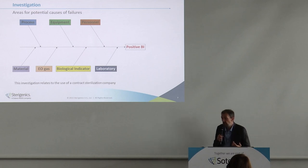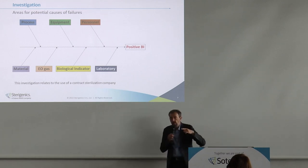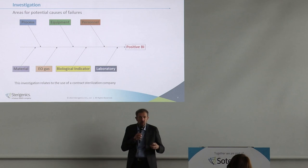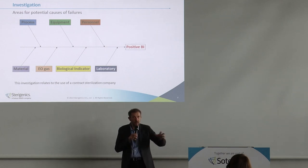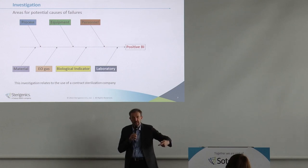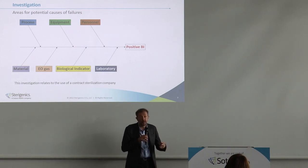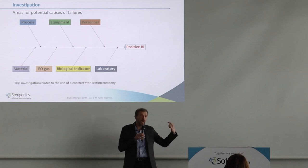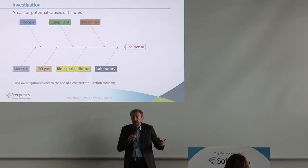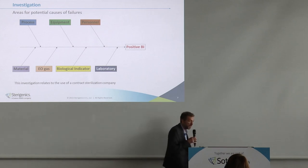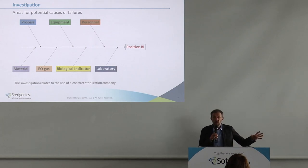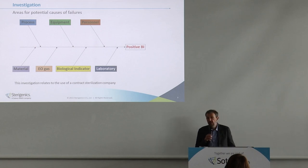One good example of contamination: when we incubate a validation load on which we expect growth, we will have some Bacillus atrophaeus around. If we then use the same laminar hood for the next testing, there might be a leftover from the previous testing that could be the root cause for the failure. In this case it's very hard to invalidate because it's going to be the same strain. It might be true it came from the prior validation, but it still has to be considered a true positive. To prevent this, we isolate and quarantine the laminar hood used for validation testing and do not use it for routine.